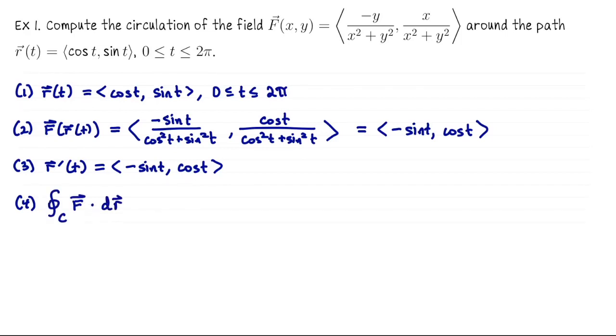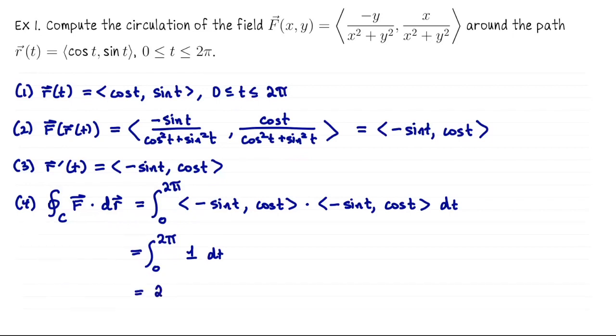We have everything we need to evaluate this circulation integral. Here I'll use the new notation just to call your attention to the fact that this is a special type of curve. It's a closed curve, so we're doing a circulation integral, but we compute it the same way. So we're going to integrate from 0 to 2π. The dot product of negative sine(t), cosine(t) with negative sine(t), cosine(t). That integrand is going to be sine²(t) plus cosine²(t), which is 1. So overall this circulation integral is 2π.